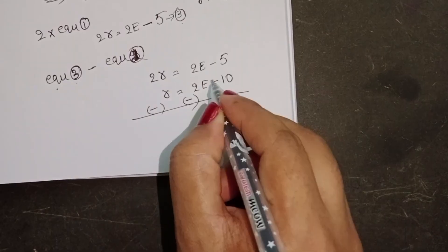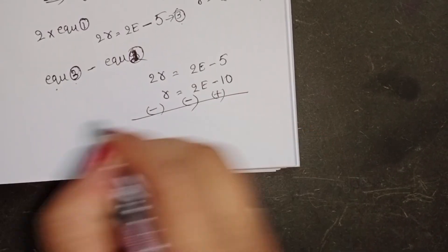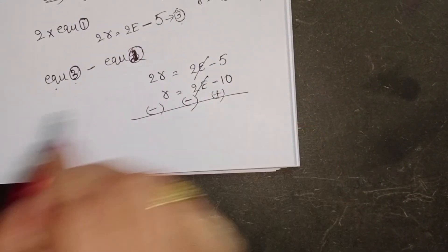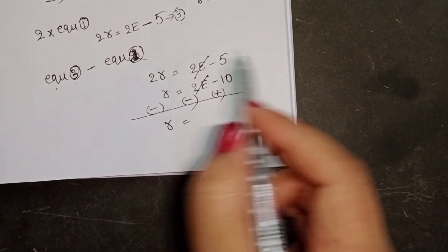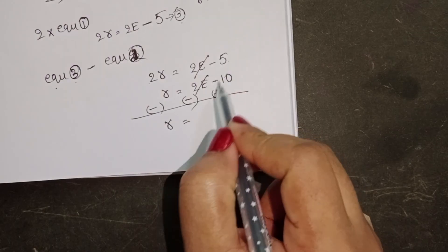Minus, minus. Here minus becomes plus. Plus 2E minus 2E get cancelled. 2R minus R is R. R equals minus 5 plus 10, it becomes plus 5.